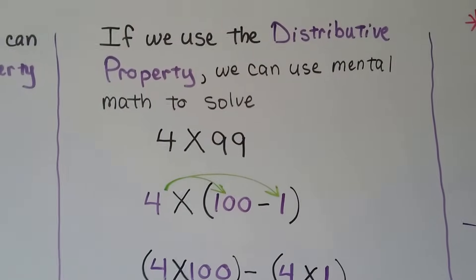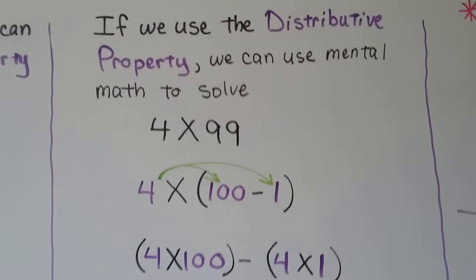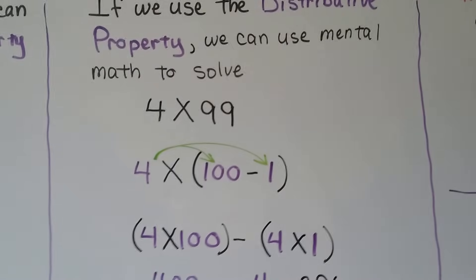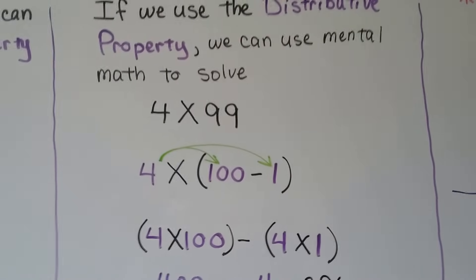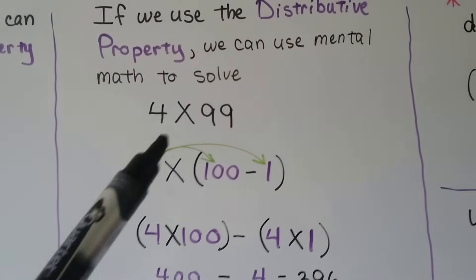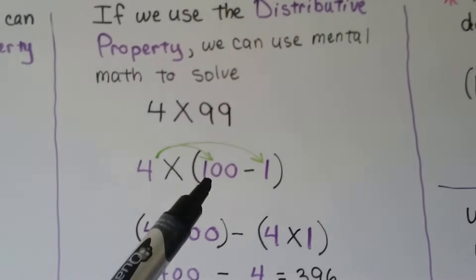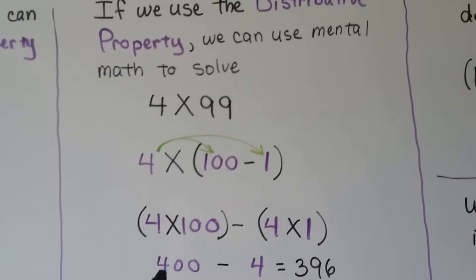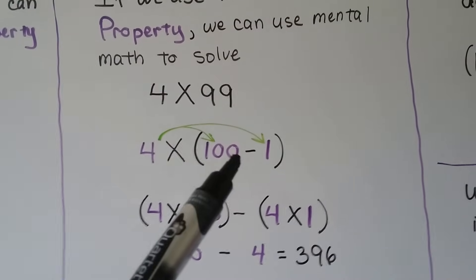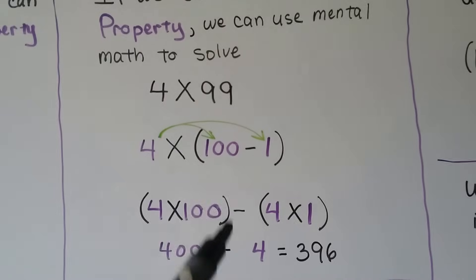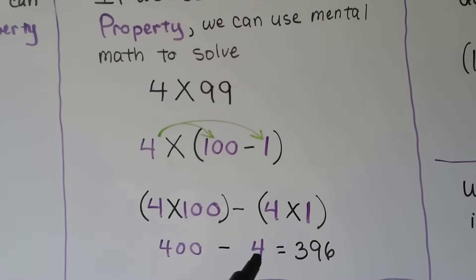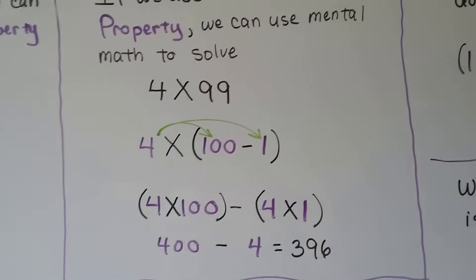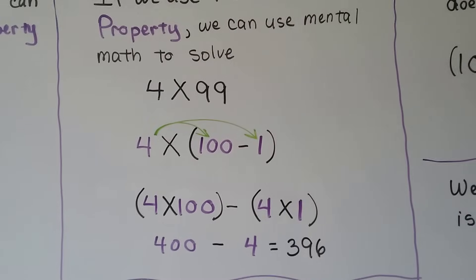Using the distributive property, we can use mental math to solve 4 times 99. Since 99 is just 1 less than 100, we represent 99 as 100 minus 1. Then 4 times 100 is 400, minus 4 times 1, which is 4. So 400 minus 4 is equal to 396.